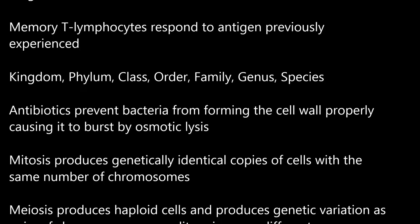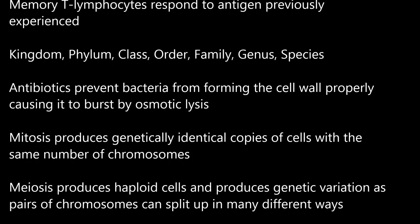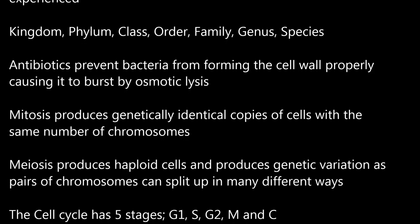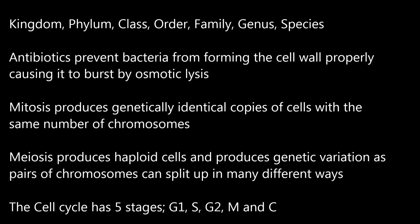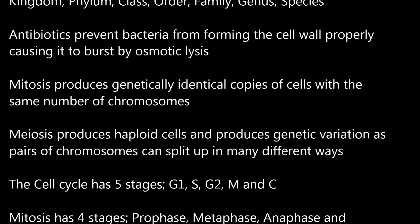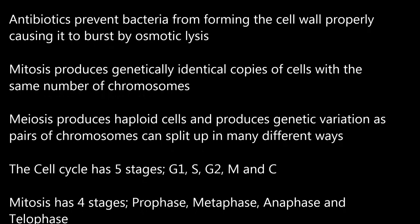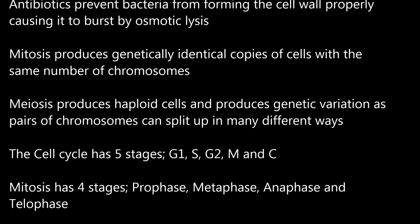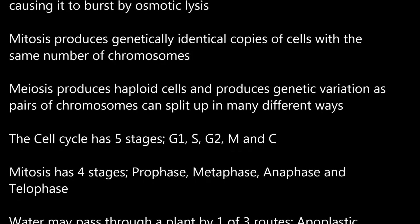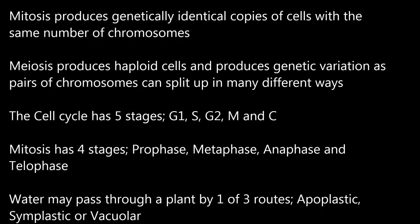Antibiotics prevent bacteria from forming the cell wall properly, causing it to burst by osmotic lysis. Mitosis produces genetically identical copies of cells with the same number of chromosomes. Meiosis produces haploid cells and produces genetic variation, as pairs of chromosomes can split up in many different ways.